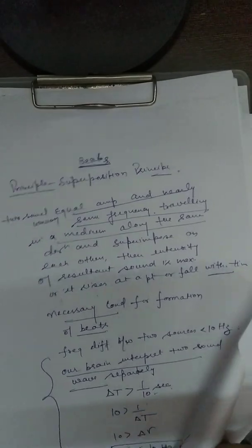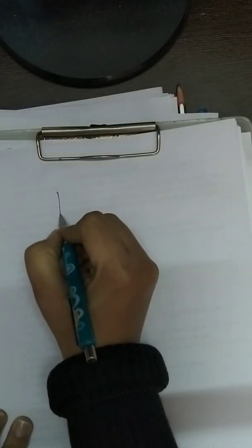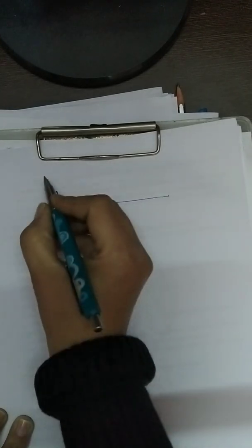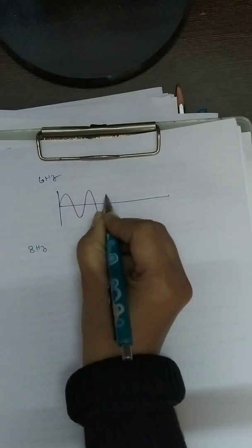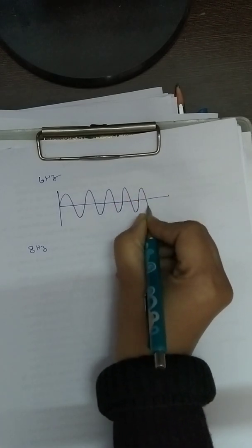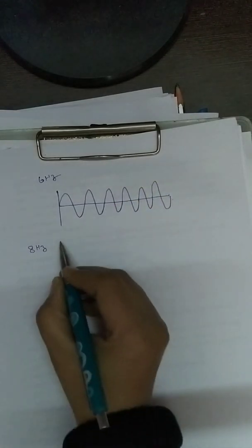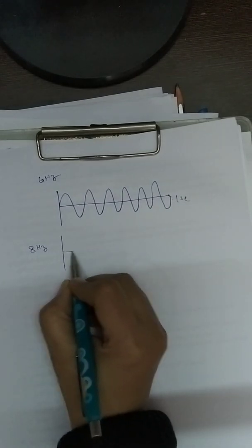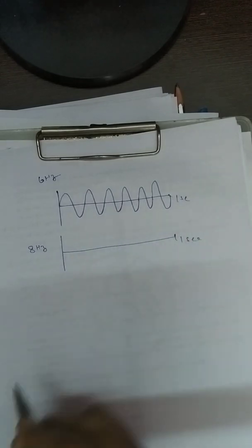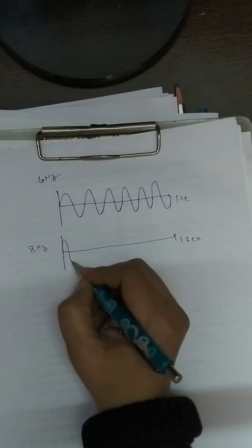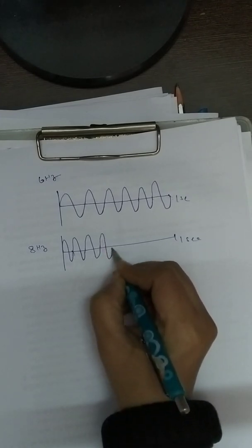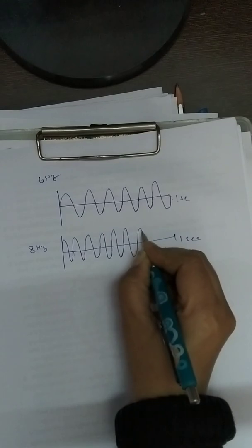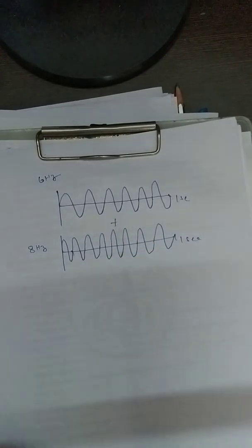If we explain it diagrammatically: suppose this is one sound wave having a frequency of 6 hertz and the other having 8 hertz. The frequency difference must be less than 10 hertz. In one second, 6 cycles get completed for the first wave — cycles 1, 2, 3, 4, 5, and 6. For the second wave, in one second it completes 8 cycles — 1, 2, 3, 4, 5, 6, 7, and 8. Now it becomes narrower.